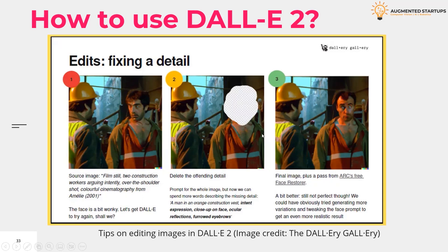The guide points out that even the creators of DALL-E 2 don't know what the tool knows and doesn't know. Instead, users have to work out what it's capable of doing and how to get it to do what they want. One piece of advice is to be specific — state whether you want a close-up image or a particular angle, and remember that an adjective without further definition could be interpreted in different ways.